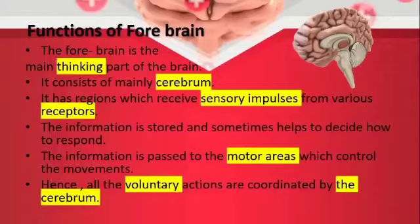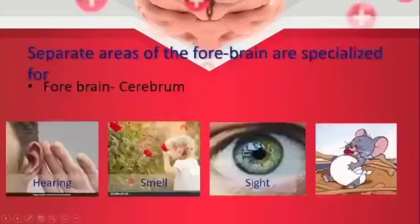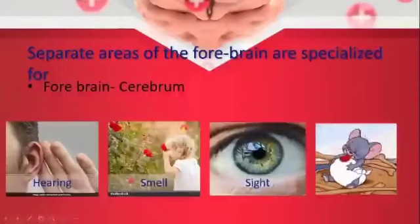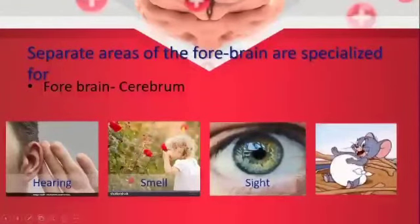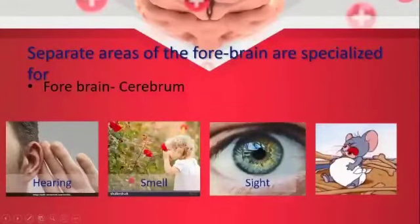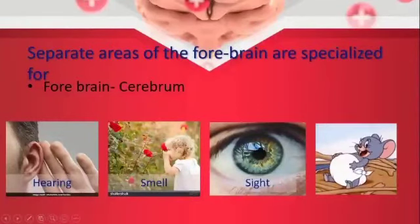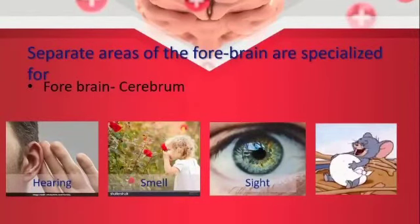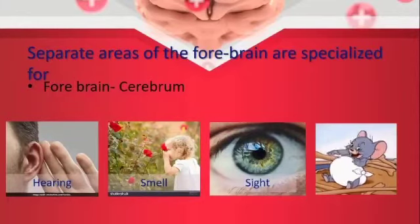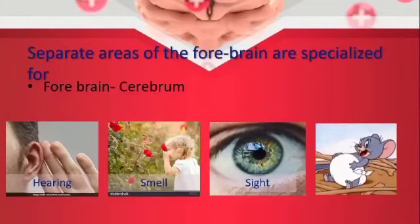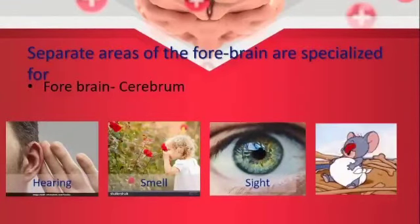All voluntary actions are controlled by the cerebrum. There are specific regions within the cerebrum — some for hearing, some for smelling. For example, if you smell a rose, the cerebrum tells you it is a rose and not any other flower, drawing on stored memory.